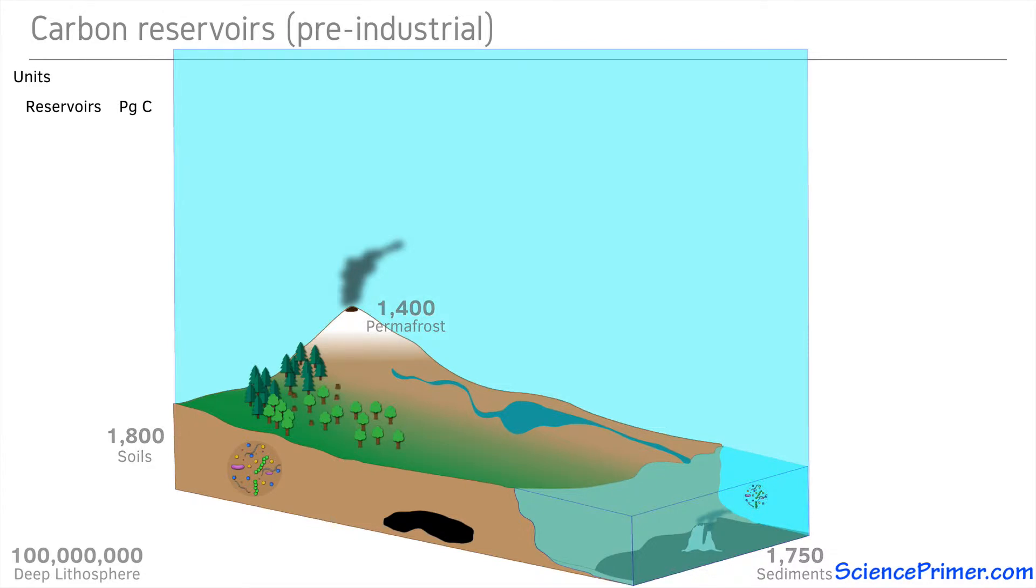Another compartment within the lithosphere that is treated separately are fossil fuels. Estimates of the total amount of carbon in this reservoir range from 4,000 to as high as 10,000 petagrams. This reservoir formed over millions of years from organic matter and soils and sediments that became buried deep in the earth, isolating it and allowing it to undergo transformations into oil, coal, and natural gas. Outside the deep lithosphere, fossil fuels represent the second largest reservoir of carbon on earth.